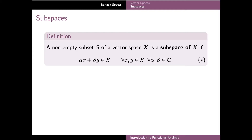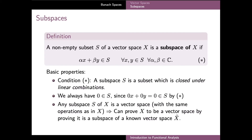By definition, for any x and y, this linear combination belongs to the vector space X because the space is closed under linear combinations. The real condition of the subspace is that this linear combination should also belong to the set S whenever x and y are elements of S. In the terminology of the previous video, condition star means precisely that the subset S should be closed under linear combinations of its elements, and if this condition is satisfied, all finite linear combinations of elements of S belong to S as well.